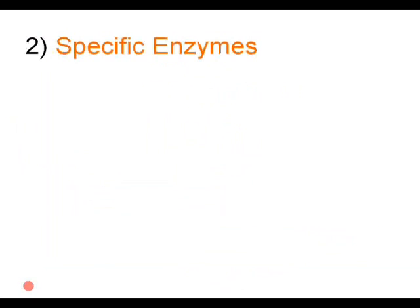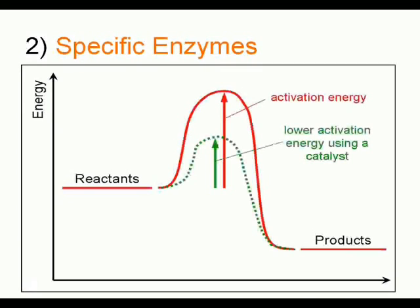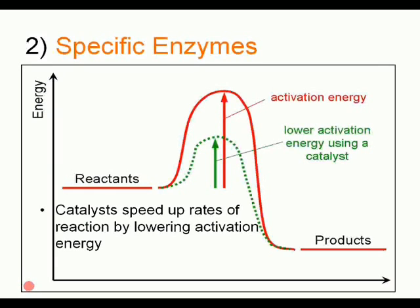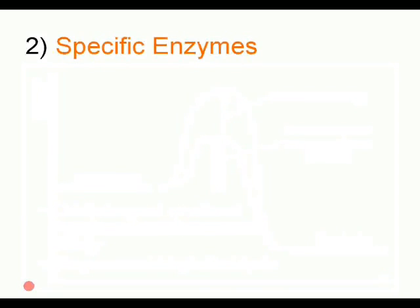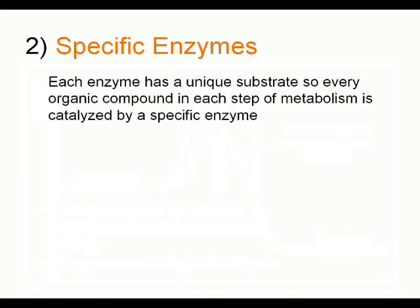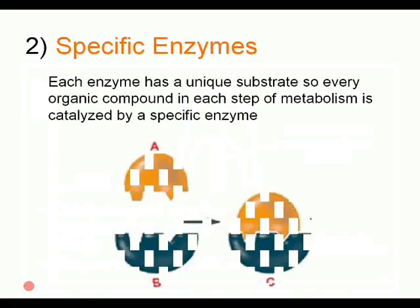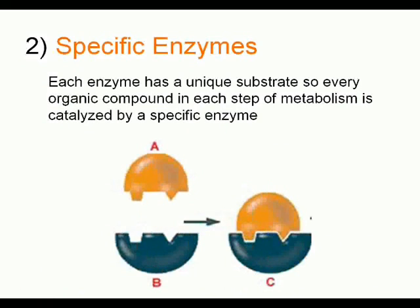Specific enzymes are the second mechanism used to regulate metabolic rate. To understand how enzymes work, consider how a catalyst works to speed up a reaction. Catalysts speed up rates of reaction by lowering activation energy, and enzymes are biological catalysts. Enzymes are very specific — they cannot work with any compound and lower just any activation energy for any reaction. Instead, each enzyme has a unique substrate, which is the reactive molecule the enzyme binds to. Each step of metabolism is catalyzed by a specific enzyme.